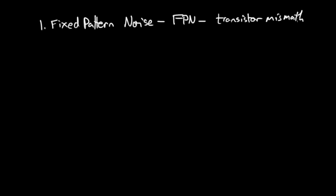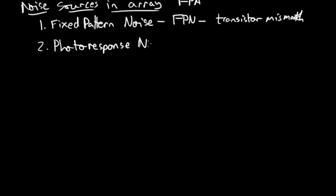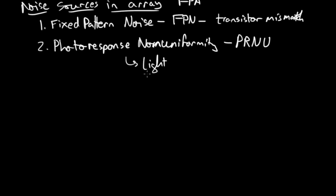The second category of noise sources in a focal plane array is photoresponse non-uniformity, abbreviated as PRNU. This is the differences in response to light that each pixel will have. Maybe one pixel for a given integration time generates two electrons and another pixel generates three and another one generates one — the actual numbers are much larger than that, but that gives you the idea.